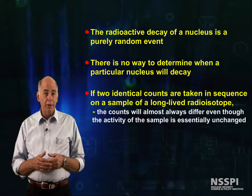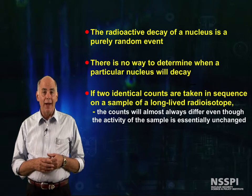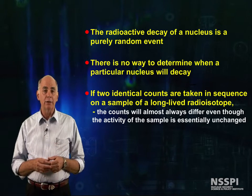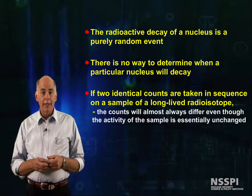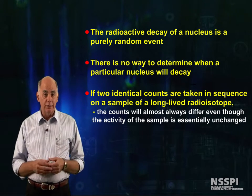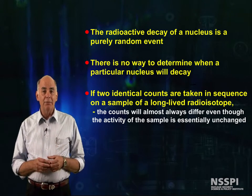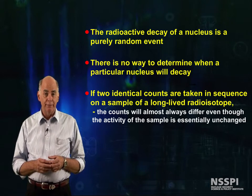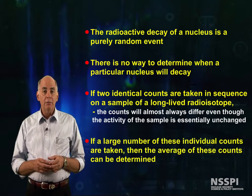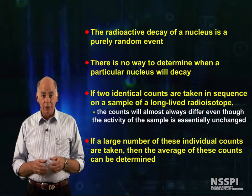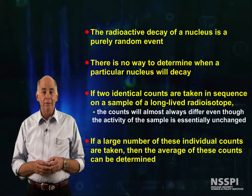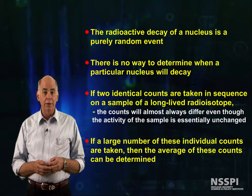Also, just like flipping coins fifty times, if two absolutely identical counts are taken in sequence on a long-lived radioisotope, the counts will almost always differ, even though the activity of the sample has not changed appreciably. If a large number of these individual counts are taken, then the average of the counts can be determined, and this average is often very useful.